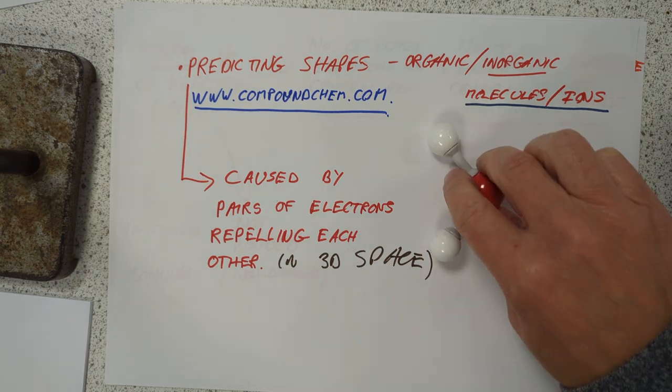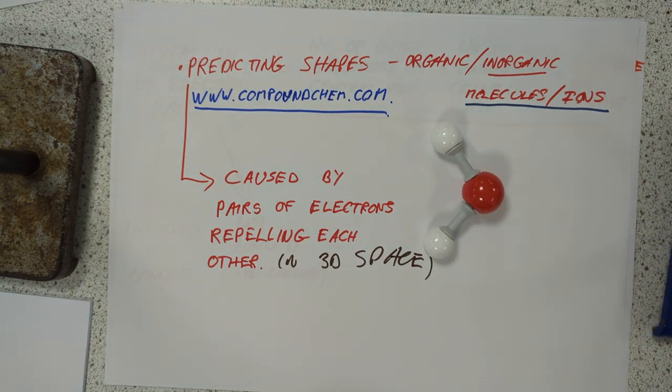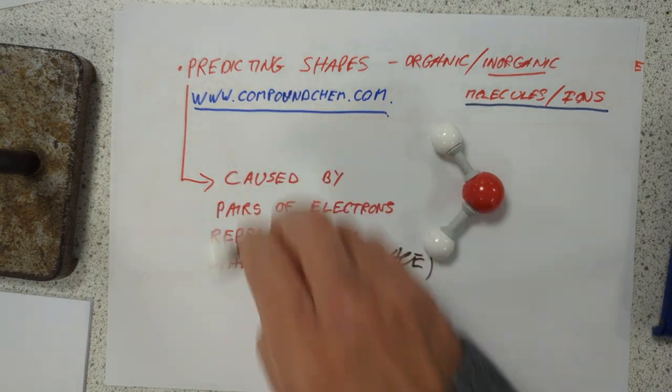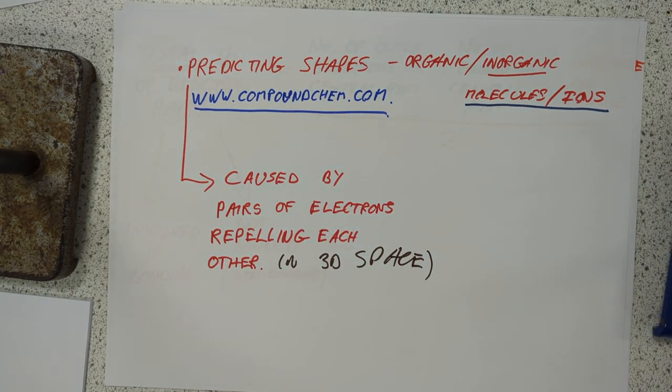This is a classic case. For example, we've known for an awful long time that water is a nice V-shaped molecule. So the question is, why? Shouldn't it just be a straight line like that? Let's have a look at the logic behind this.